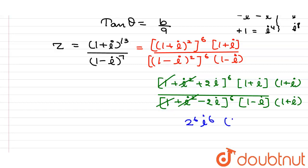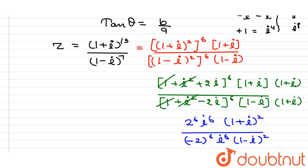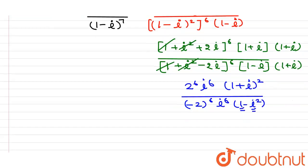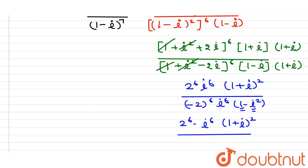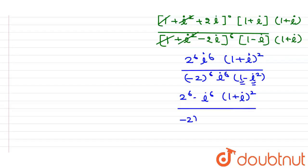We now have 2^6 × i^6 × (1+i)² divided by (−2)^6 × i^6 × (1−i) × 2. Note that (1−i)(1+i) = 1 − i² = 1+1 = 2. Substituting: 2^6 × i^6 × (1+i)² divided by 2^6 × i^6 × 2.